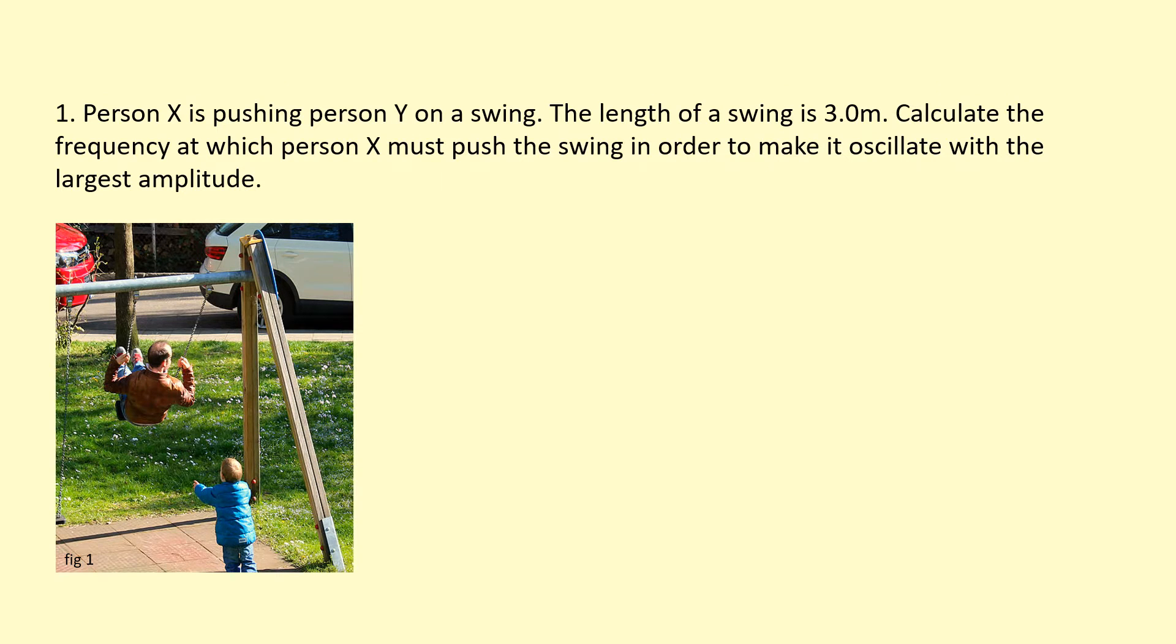First, let's work out the natural frequency of the swing, and we can find that using this equation here for the time period. So if we put the length of the swing, which is 3 meters, divided by the gravitational field strength, we get a time period of 3.47 seconds. And if we do 1 over the time period, we can get the frequency: 0.23 hertz is the natural frequency.